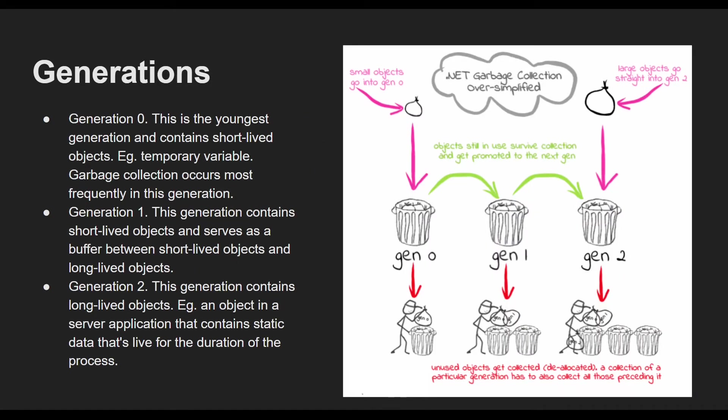Coming to the generations. Garbage collection primarily occurs with the reclamation of short-lived objects to optimize the performance of the garbage collector. The managed heap is divided into three generations: 0, 1, and 2, so it can handle long-lived and short-lived objects separately. The garbage collector stores new objects in generation 0. Objects created early in the application's lifetime that survive collections are promoted and stored in generation 1 and 2.